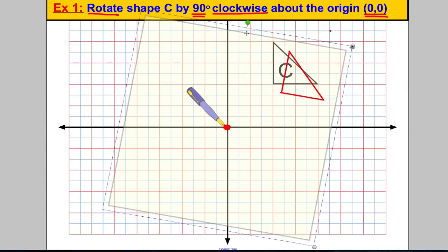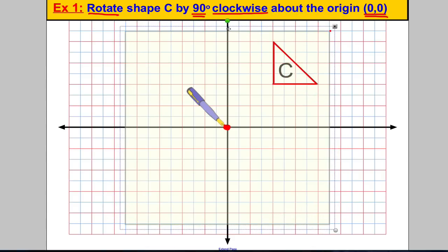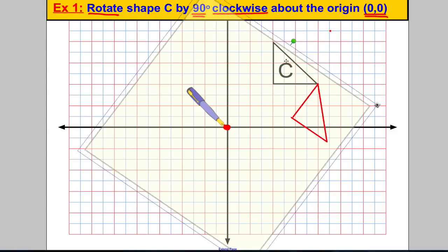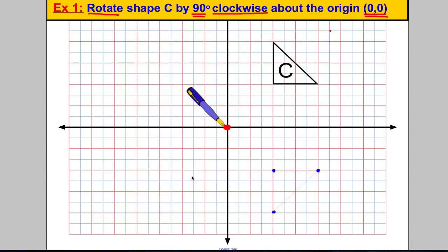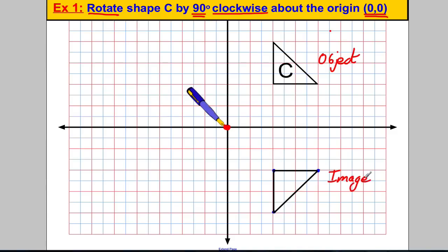Now we're going to go clockwise — not anti-clockwise — 90 degrees, until the top edge is facing vertically down rather than horizontally across. Let's perform that rotation. That's where our new shape will be. Peel off the tracing paper, mark the vertices of the triangle, then remove the tracing paper and fill in the shape. You need to know two words: the original shape is called the object, and the shape after the rotation is called the image. That's a 90 degree clockwise rotation about the origin.